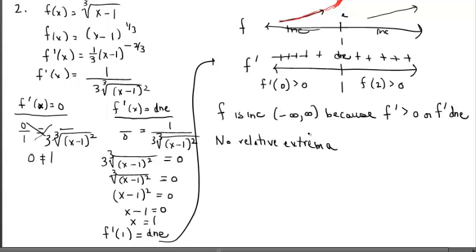So we looked at a polynomial function that was well-behaved, we looked at a radical function, and in the third and final example we're going to look at a rational function — a function that has a fraction. So now we're going to do that one in a different context.